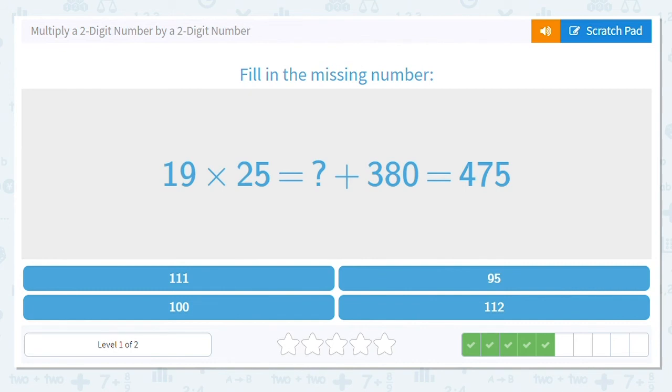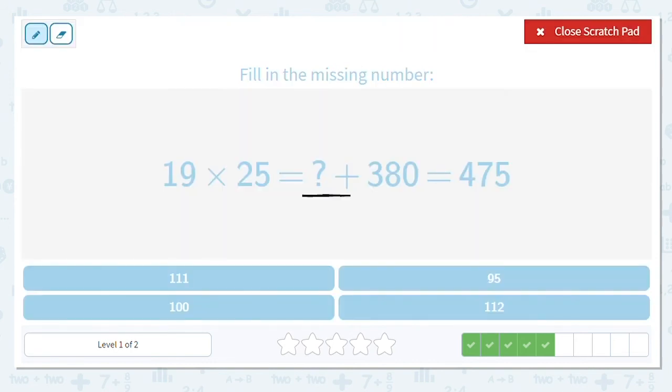19 times 25 equals, what's our first partial product? So we do 19 times 25. Now we're not worried about the tens place. We're worried about the ones place because we already have the tens place done. So 9 times 5 is 45, put down the 5, carry the 4. 5 times 1 is 5 plus 4 more is 9. So our partial product here is 95.